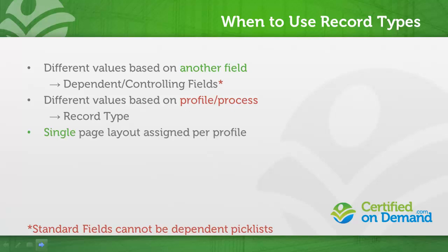Now, let's say that the sales and marketing teams want information displayed slightly differently on the opportunity page, but picklist values remain the same for both teams. This can be accomplished by creating two different page layouts and using page layout assignment to direct the profile to the corresponding page layout. Record types in this scenario are not required.